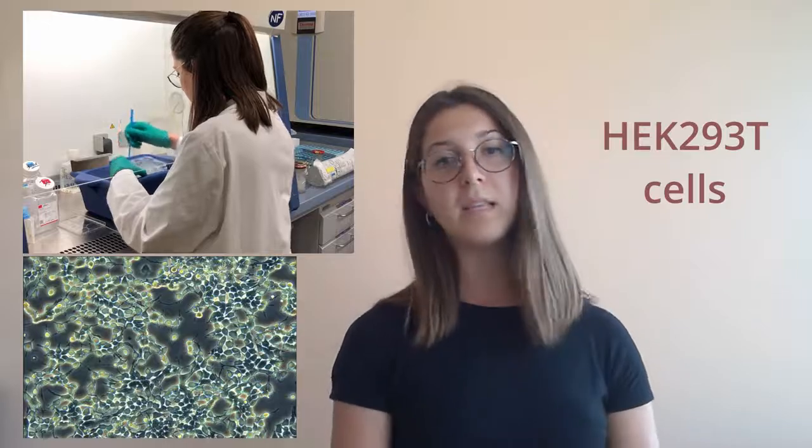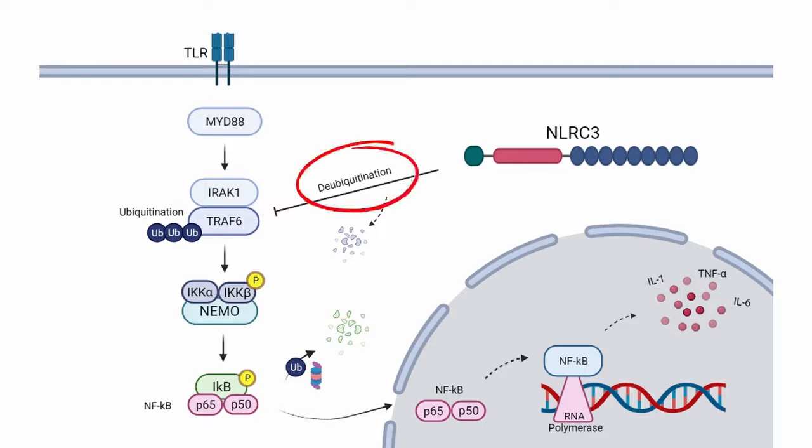I use human cell lines to express the anemone proteins and investigate how the anemone NLRC3-like expression influences the NF-κB pathway in HEK293T cells. In humans, NLRC3 inhibits the activation of this pathway by deubiquitinating TRAF6.